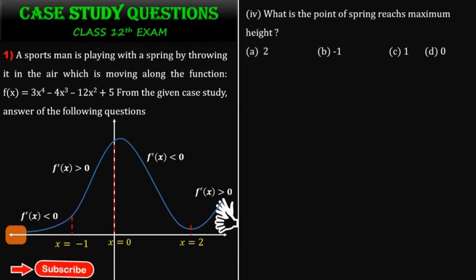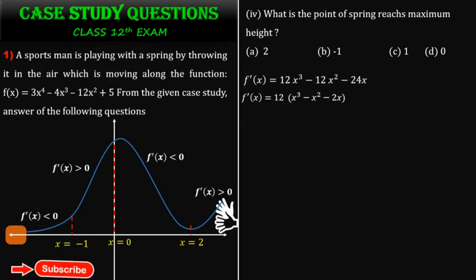Fourth question: what is the point in the spring to reach the maximum height? We apply the second derivative test. The critical points are x = -1, x = 0, and x = 2. We find f''(x) and substitute each point.